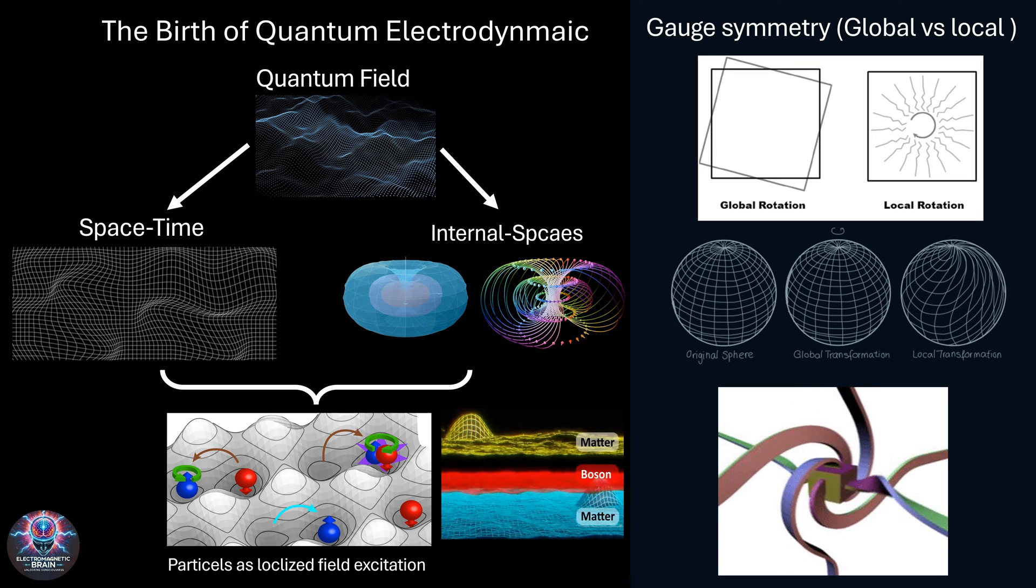For a long time, physicists thought of the vector potential as just a mathematical trick to simplify calculations. But then came a groundbreaking discovery, the Aharonov-Bohm effect. It showed that even in places where there's no electric or magnetic field, the vector potential still influences the behavior of electrons. This was a game-changer. It meant that electromagnetism wasn't just about forces. It was about the deep geometry of space itself. And then came the next leap forward, the realization that electromagnetism isn't just waves in a field. It's actually a dance of virtual photons, constantly being exchanged between charged particles. These virtual photons flicker in and out of existence, creating the force we call electromagnetism. So what does this all mean? It means that what we once thought of as empty space is actually alive with quantum fluctuations, shaping the very structure of reality.